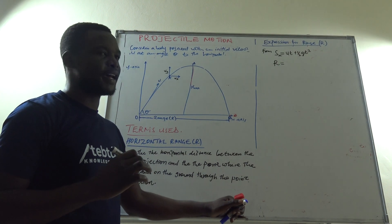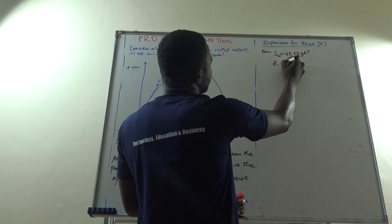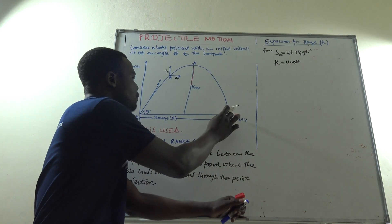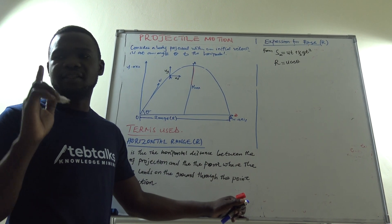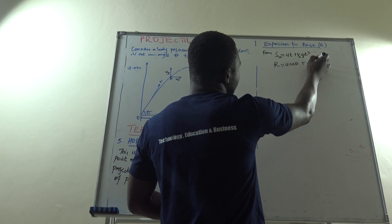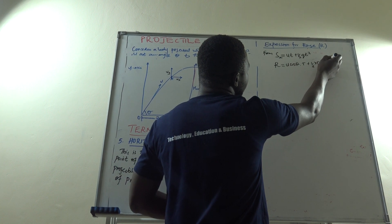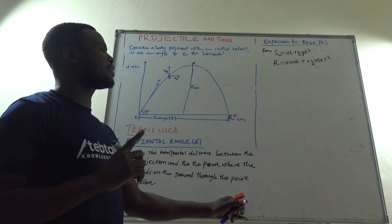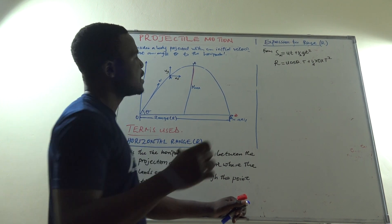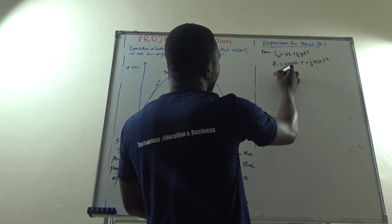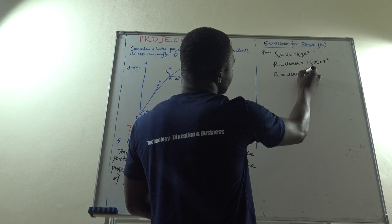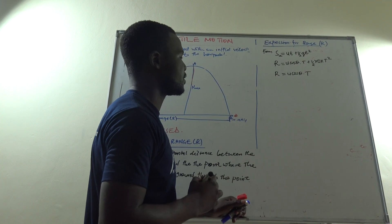We also say that the component of the initial velocity in the horizontal direction should be equal to U cosθ. The time taken to move from the point of projection to where it lands we call capital T. Therefore R equals U cosθ times T plus one half times zero times T squared. We say that for horizontal motion the acceleration is zero, so the horizontal range R is equal to U cosθ times T.